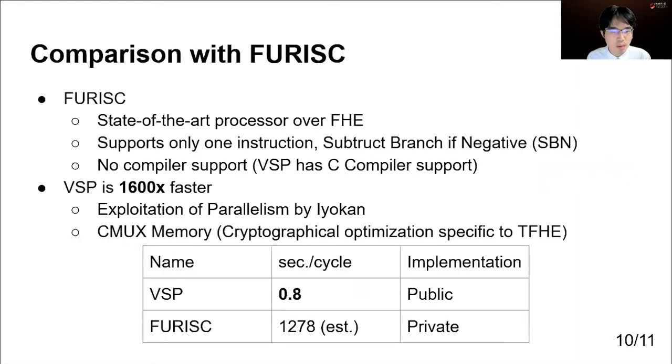To emphasize the novelty of our work, we compared VSP with FURISC, a state-of-the-art processor over FHE. FURISC only supports one instruction, and this causes no compiler support, while VSP has C compiler support. The evaluation of the circuit of FURISC is estimated to take 1278 seconds per cycle, while VSP takes only 0.8 seconds. This means VSP is about 1600 times faster than the state-of-the-art. In addition to that, our implementation is publicly available, while the one of FURISC is not.